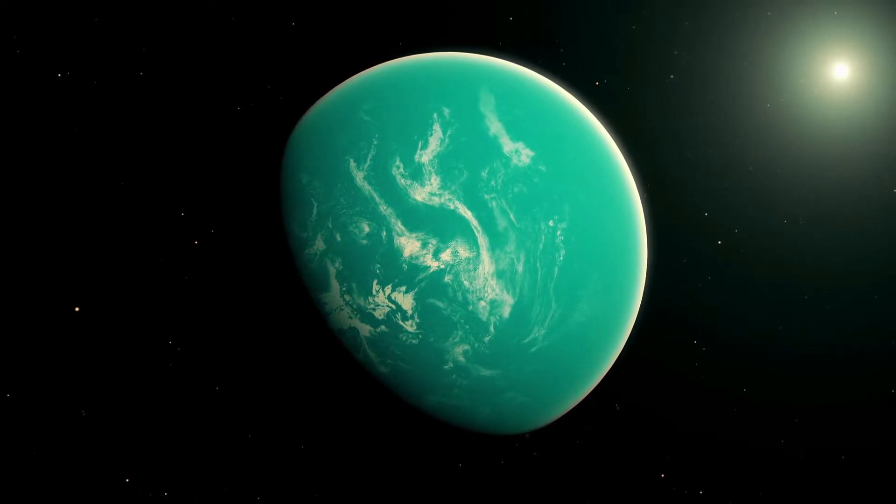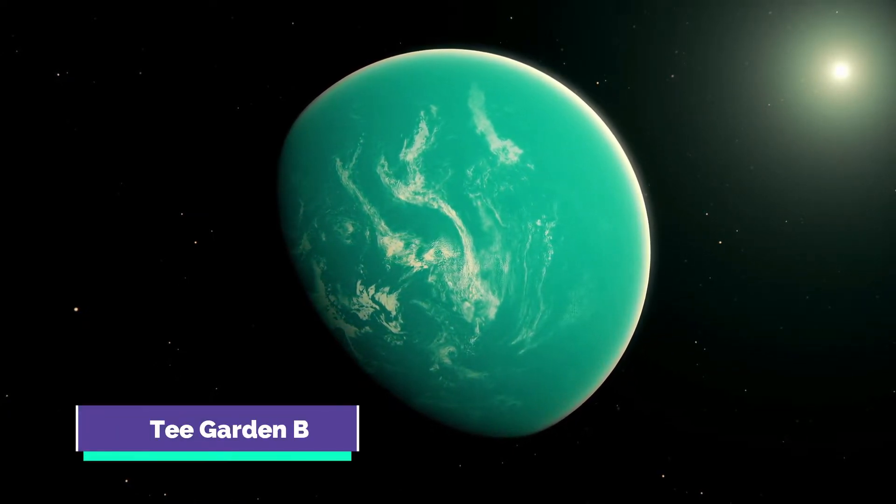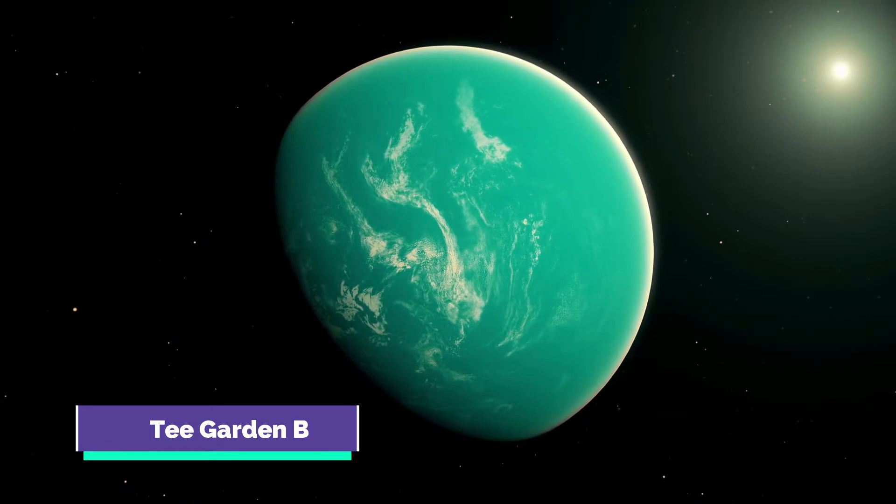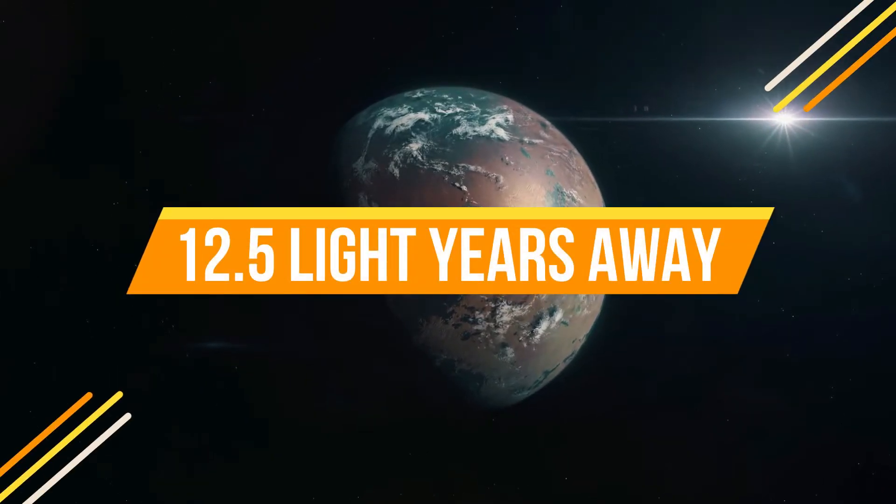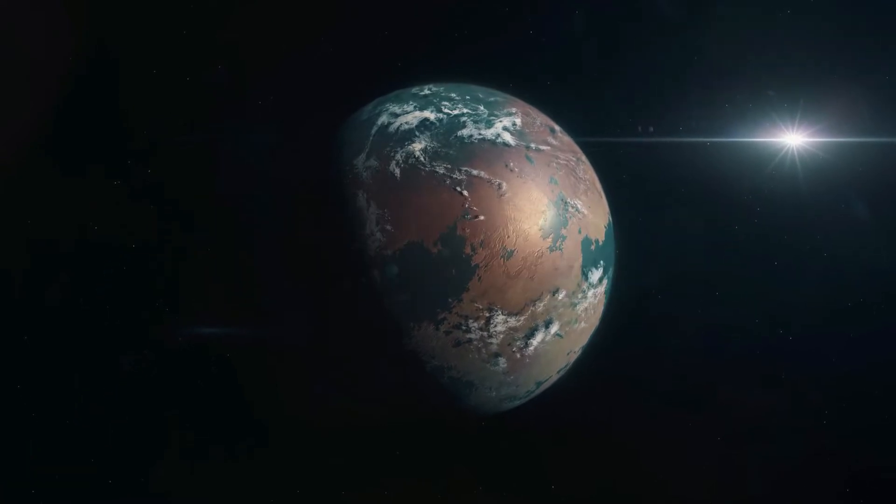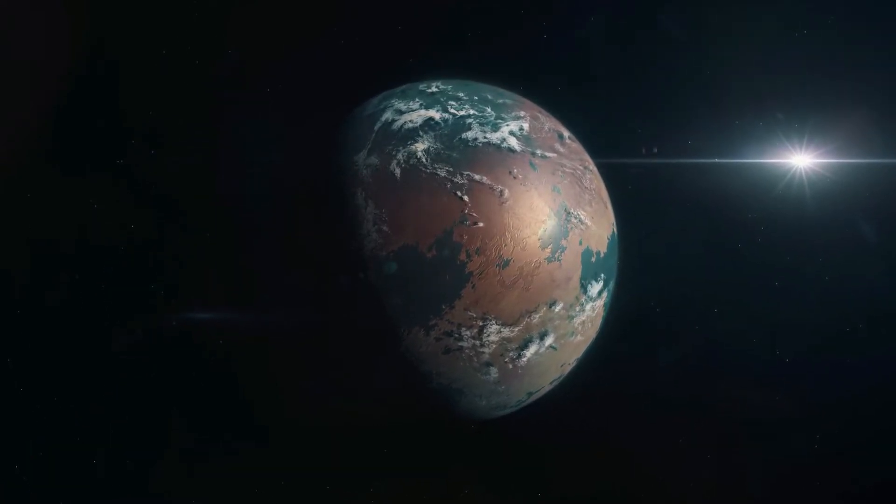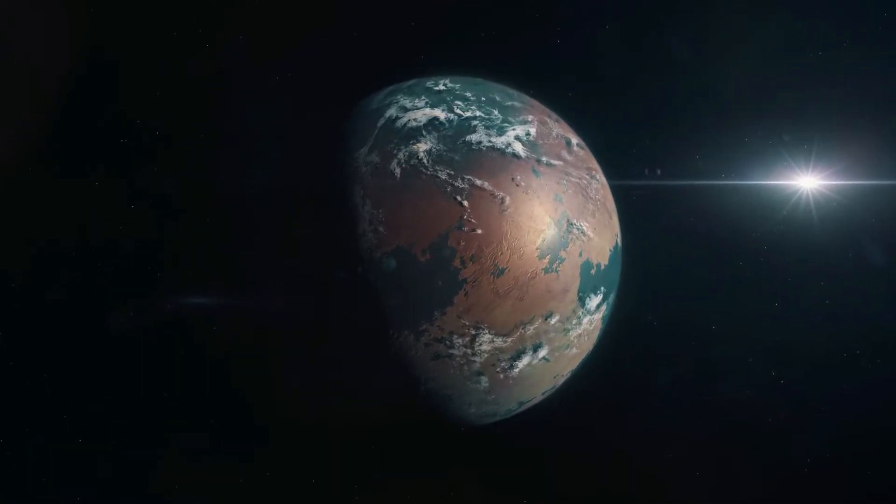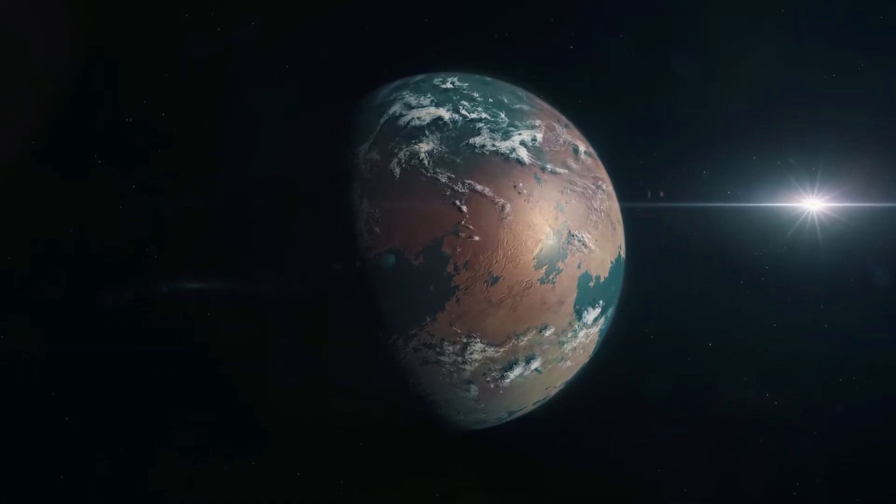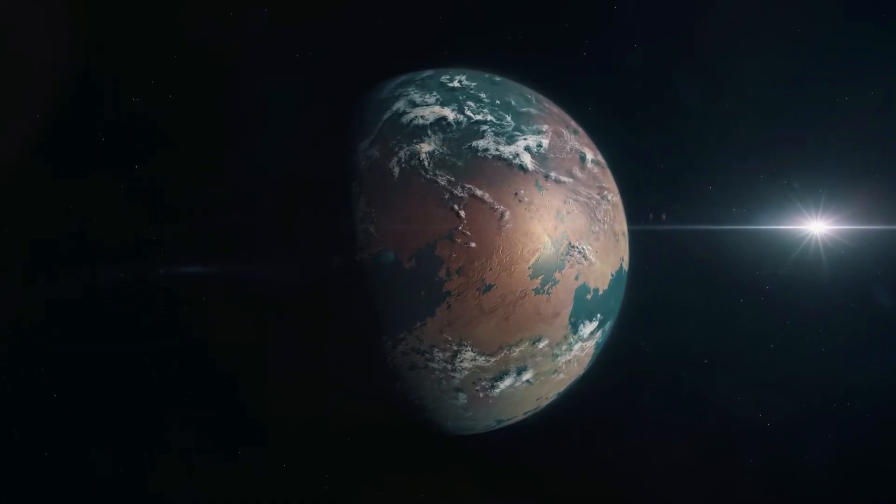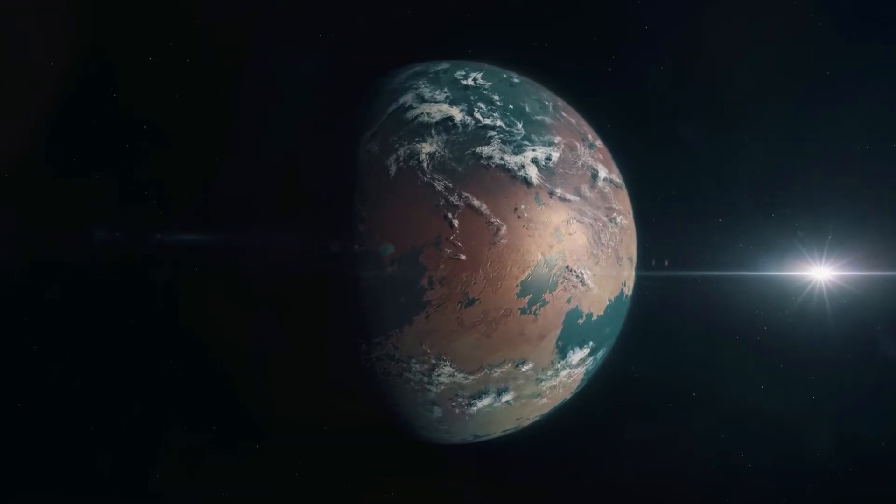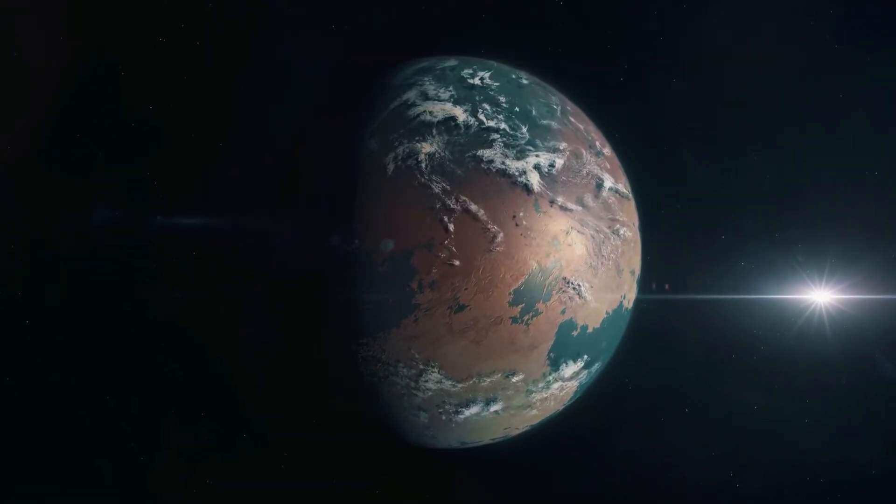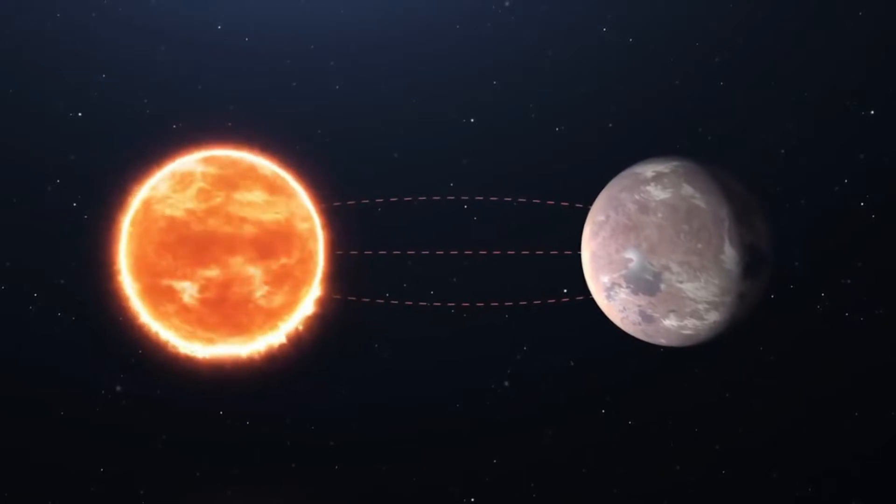The next planet on our list is Teegarden B. It is a super-Earth exoplanet that orbits a red dwarf star that is about 12.5 light-years away from us in the constellation Aries. It orbits its star Teegarden every 4.9 days, with its orbital distance being 0.04 astronomical units. The star itself is only about 8% the size of our sun, and is really dim. That is why the Teegarden B is habitable despite being awfully close to its star.